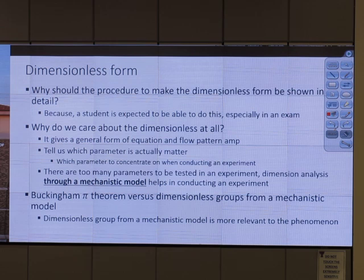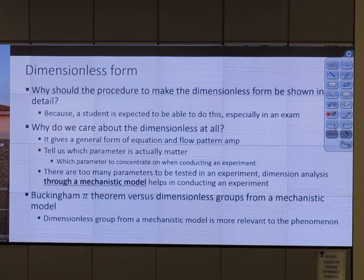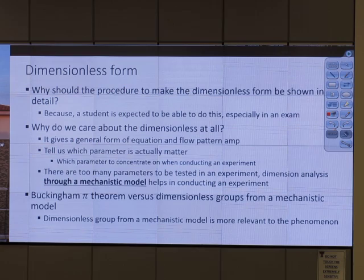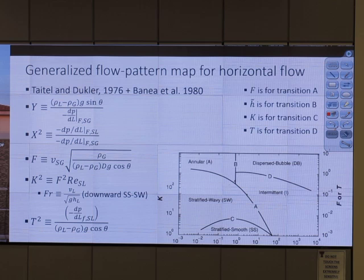This dimensionless form is different from the one from pure empirical analysis because there's a physical meaning behind it. There's a derivation — a governing equation that is not just from nowhere, but there's a reason for those governing equations. We do some kind of force comparison. So when we know those parameters, we can plot this kind of graph — a graph of the dimensionless form to check A, B, C, D.